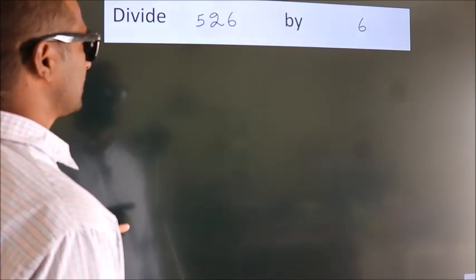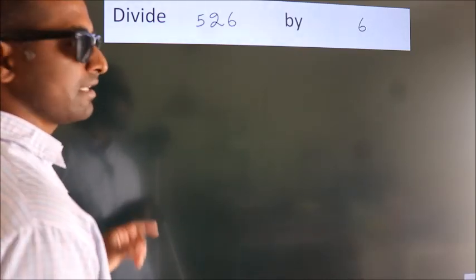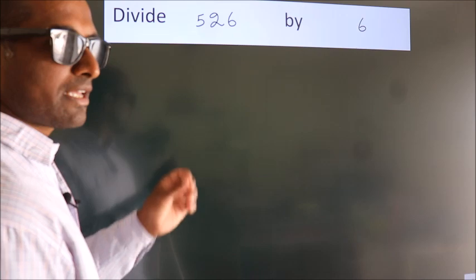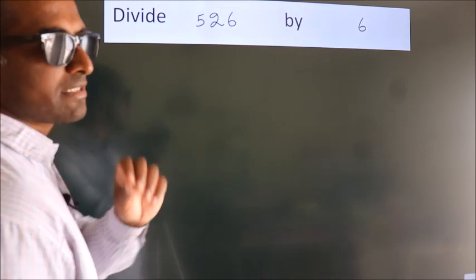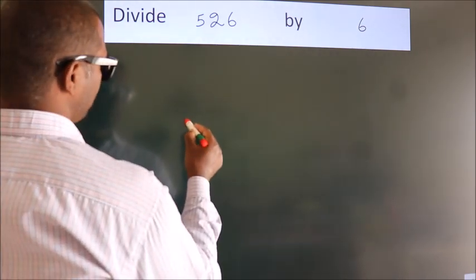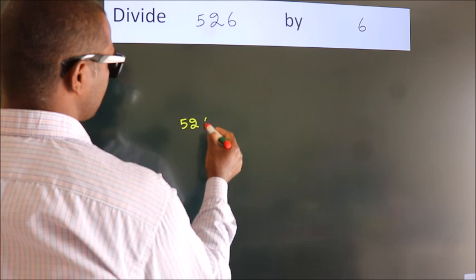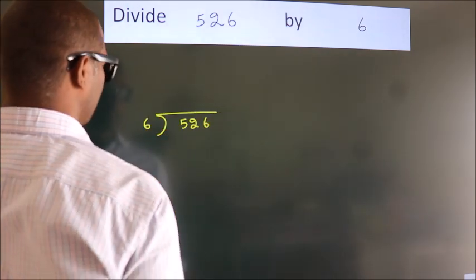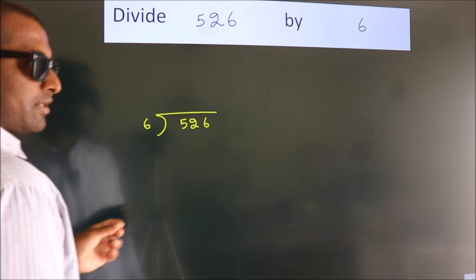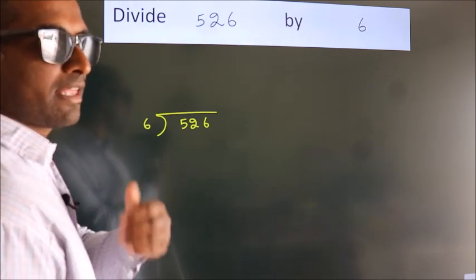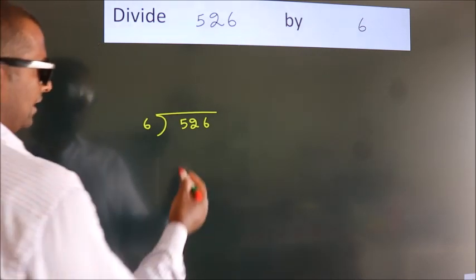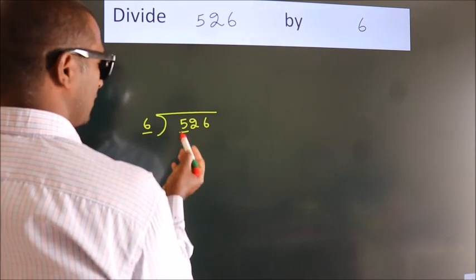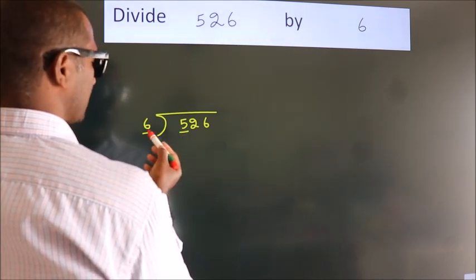Divide 526 by 6. To do this division, we should frame it in this way: 526 here, 6 here. This is your step one. Next, here we have 5, here 6. Five is smaller than 6.